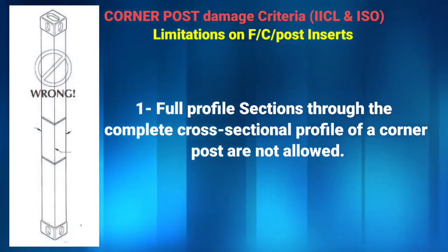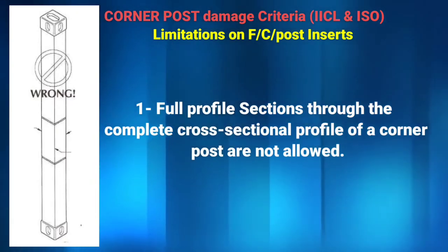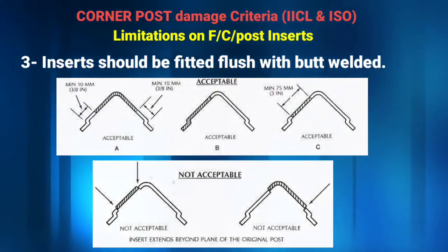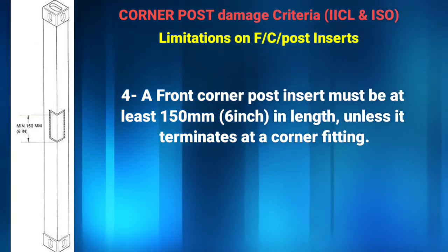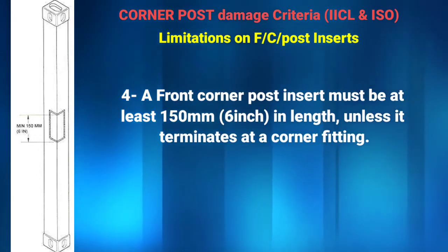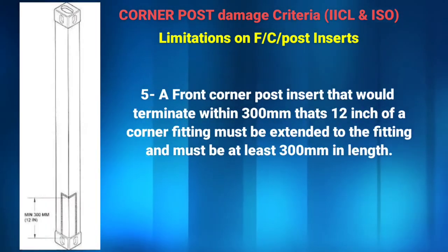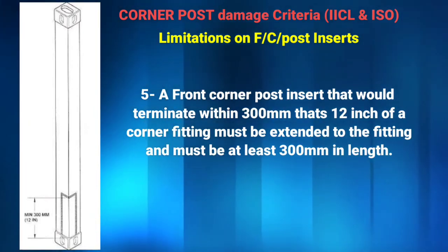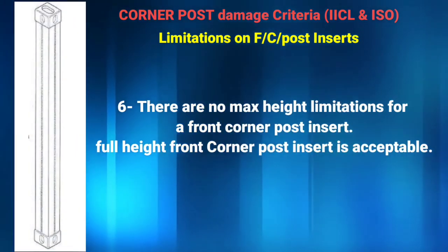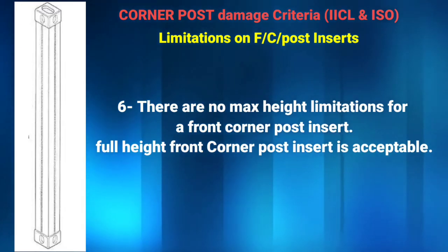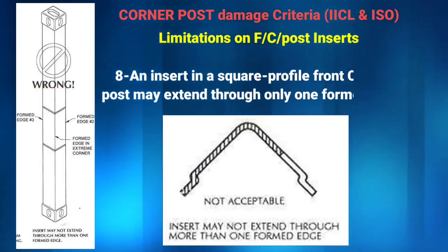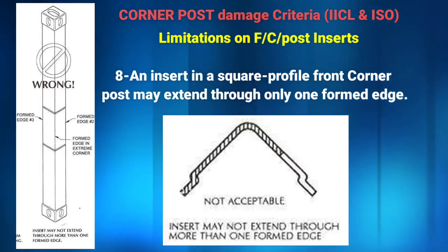Limitations of front corner post inserts: 1. Full profile sections through the complete cross-sectional profile of a corner post are not allowed. 2. There is no limit to the number of inserts allowed in a front corner post. 3. Inserts should be fitted flush with butt welded. 4. A front corner post insert must be at least 150 mm in length unless it terminates at a corner fitting. 5. A front corner post insert that would terminate within 300 mm (12 inches) of a corner fitting must be extended to the fitting and must be at least 300 mm in length. 6. There are no maximum height limitations for a front corner post insert — a full height front corner post insert is acceptable. 7. No insert to a front post shall share the same horizontal plane as another insert. 8. An insert in a square profile front corner post may extend through only one formed edge.